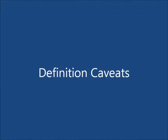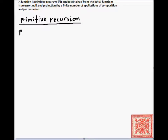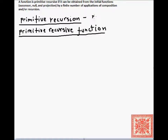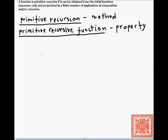A couple of caveats about the definitions introduced so far. Primitive recursion is a method of obtaining functions, whereas a primitive recursive function is a property — a function may or may not be primitive recursive. So primitive recursion refers to the operation, while primitive recursive is a property of a function.